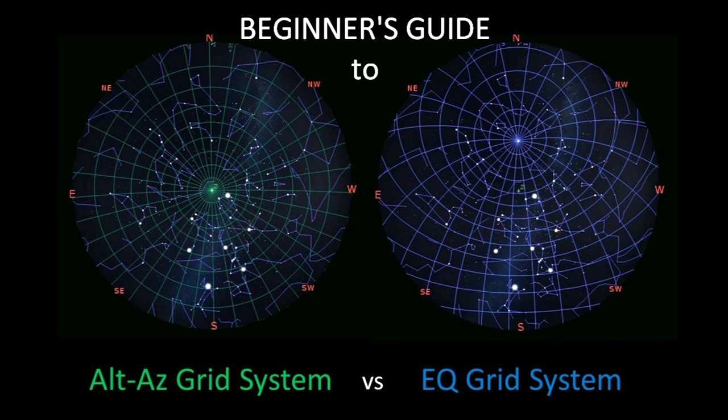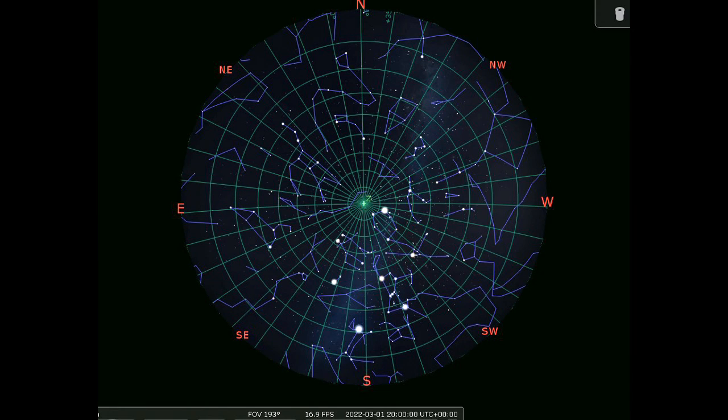Now, first of all, let's look at the Alt-Az system. Alt-Az stands for Altitude and Azimuth. And what you have here is an imaginary grid that is placed across the whole sky. So this is as it would look on the 24th of March from my location at a particular time of night from Oxford. This grid has a center at the bit directly above your head, i.e. the zenith, and then it spreads out from there.